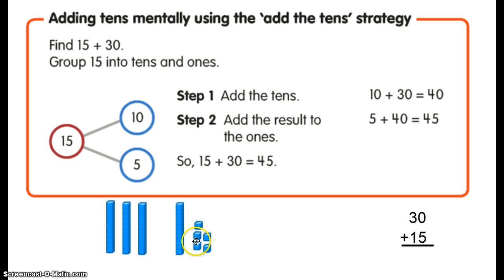So here's my 30, and here's my 15. That's 1 ten and 5 ones. So here I split my 15 into 10 and 5, and I'm going to add the tens first. I put these together, and that makes 40, and then I've got my 5 here. I put those, which is 45.